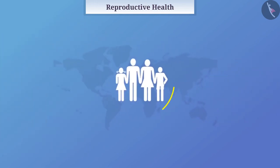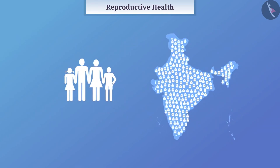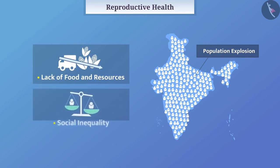Unprotected sex also increases the chances of sexual transmission of many diseases. If there is no control over childbirths, then there is a problem of excessive population growth which is called population explosion. This causes problems such as lack of food and resources, social inequality, etc. Therefore, every person should have the necessary information related to reproductive health.